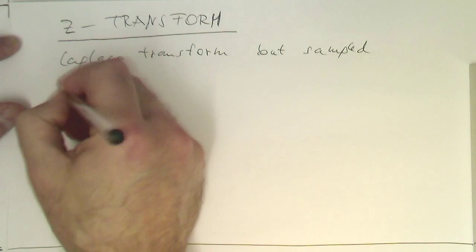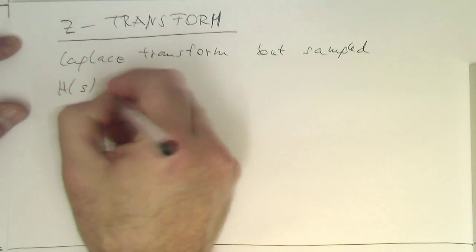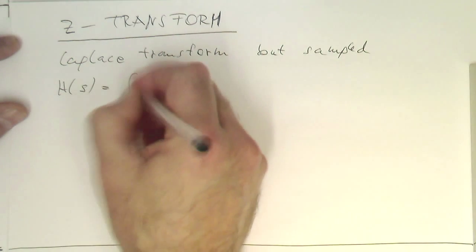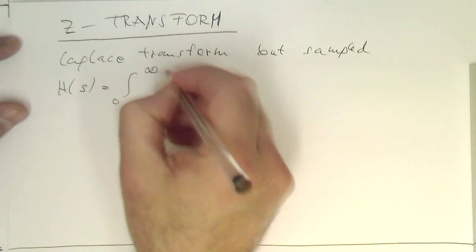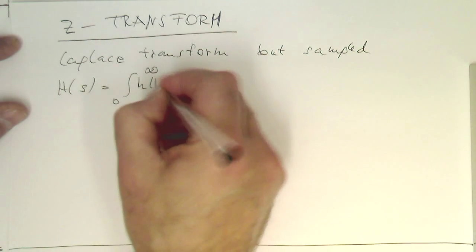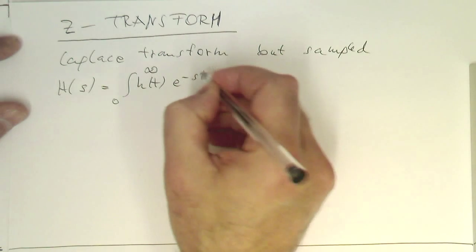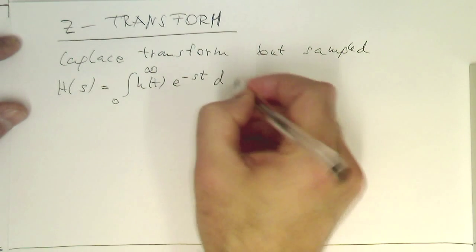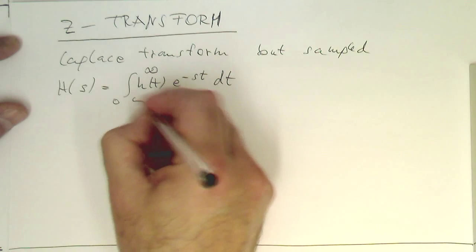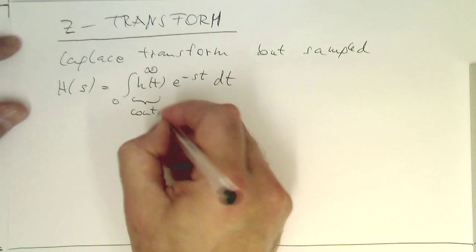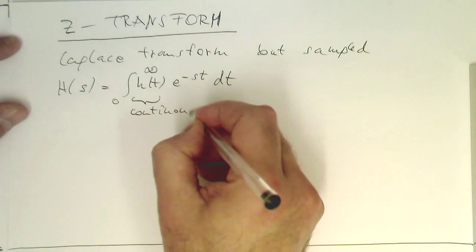Let's write this first down in its normal form, in its continuous time domain form like this. That's h multiplied by e^(-st) dt. That's still continuous here. The h is continuous.